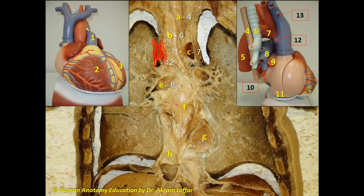F is the most posterior chamber of the heart — the left atrium. Being the most posterior part of the heart, it is closely related to the esophagus. Left atrium matches with 10. In the plastic model, the left atrium receives the pulmonary veins, two on either side. You can see the close relation between the left atrium and the esophagus.